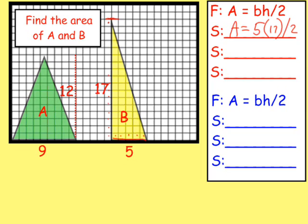Now let's look at the green triangle. The base, if you count — even though some squares are partial they still count — is 9 blocks. The height, counting all the way up, is 12 blocks high. So you would do 9 times 12 divided by 2 to find the area of that triangle on the grid. And that's all there is to it — that's how you find the area of a triangle.